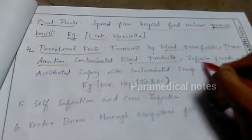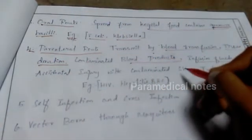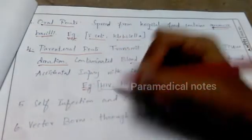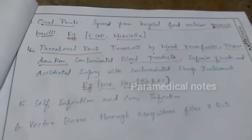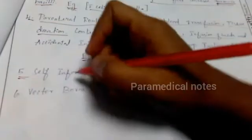The parenteral route spreads through skin, blood, tissue, and contaminated blood transfusion or blood products. The viruses that spread through this route include HIV, Hepatitis B, and Hepatitis C.